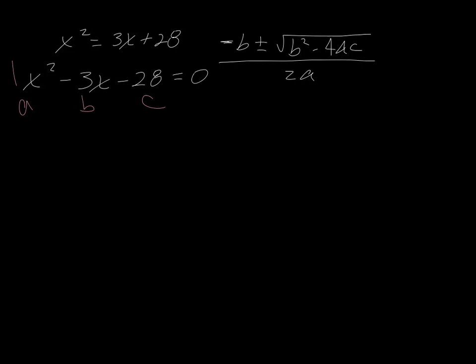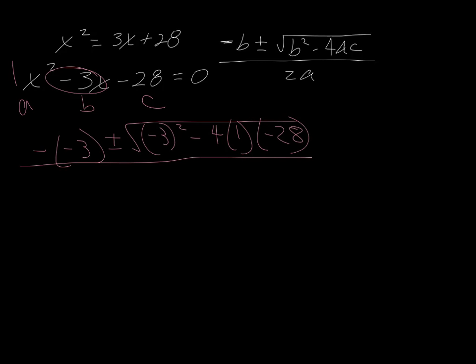So let's plug the numbers in. My B is negative 3. Don't forget to take the whole negative there. Plus or minus the square root of B squared minus 4 times 1 times negative 28, all over 2 times 1.